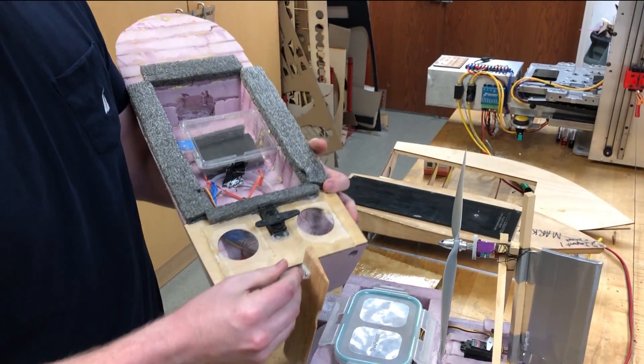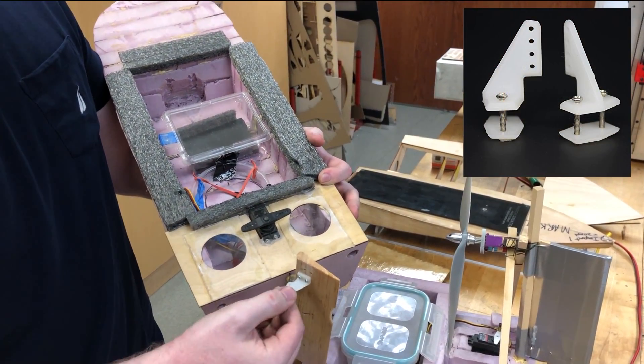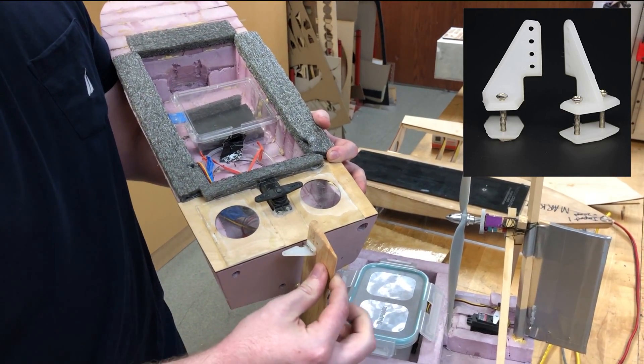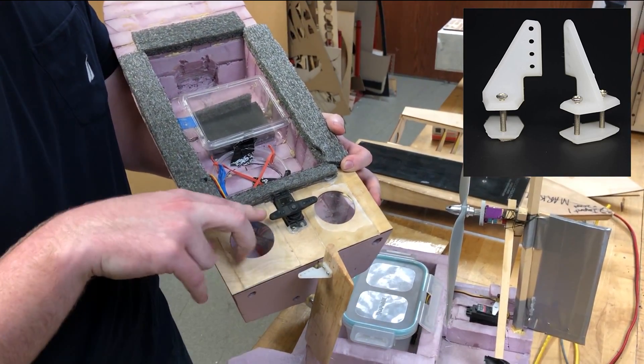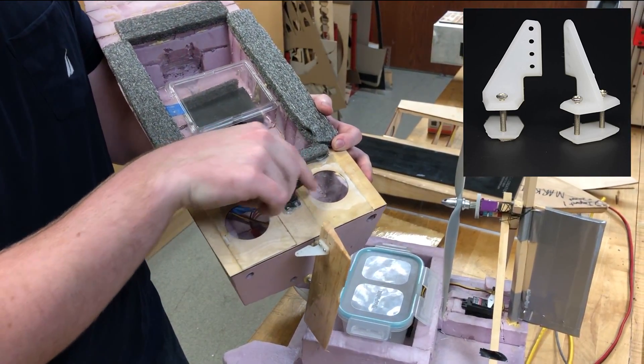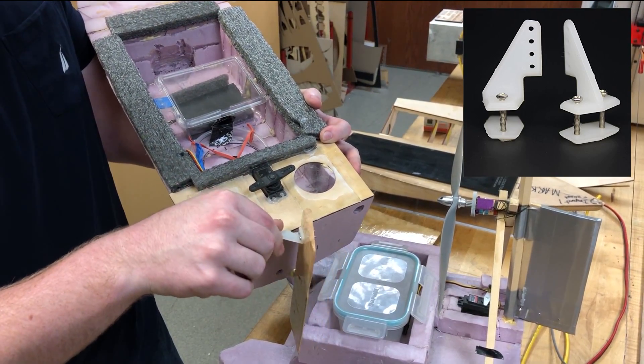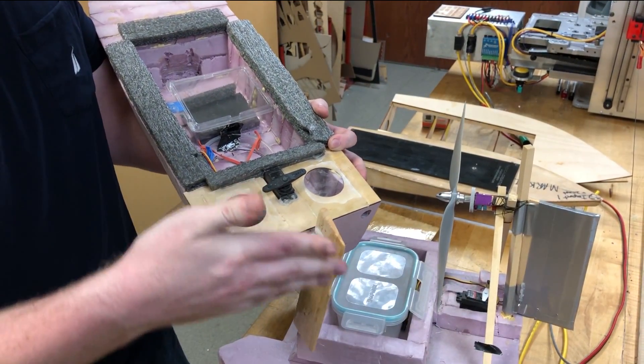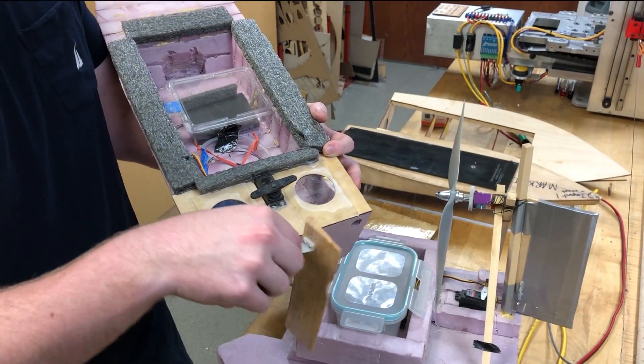Another thing you're going to want is this control horn. This is something that you can just bolt on or glue on to your rudder. When you put a wire between the servo and that, it will allow this to move. Without that you won't have any leverage and your rudder won't be able to turn.